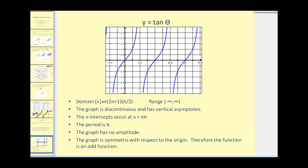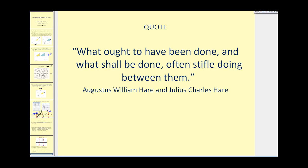Let's summarize what we have discovered. Tangent theta is graphed here in blue. Our domain: any x value that is not an odd multiple of pi over two radians, because that's where we have our vertical asymptotes. The graph is discontinuous and has vertical asymptotes. The x intercepts occur at multiples of pi. Here we see zero, pi, two pi for the x intercepts. The period is pi. There is no amplitude. The graph is symmetrical with respect to the origin and therefore is an odd function. I hope you found this video helpful. Thank you for watching.